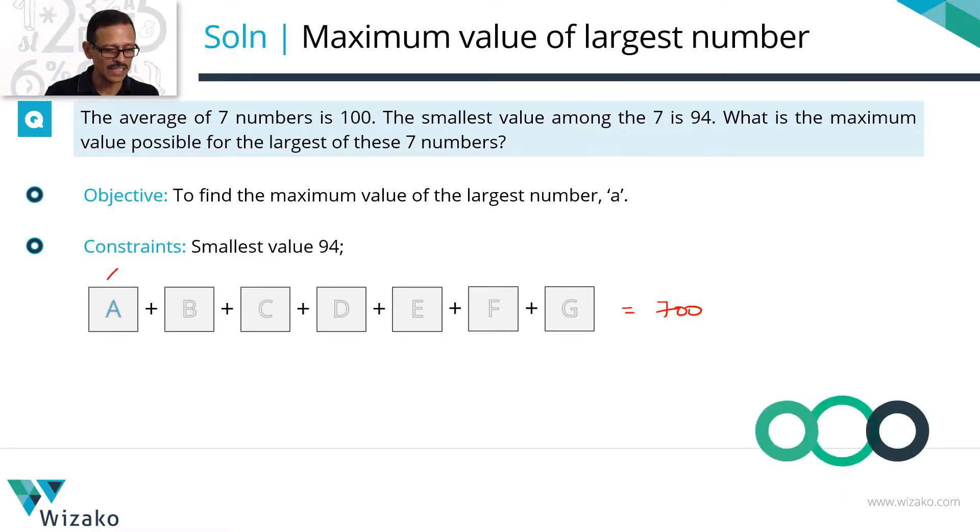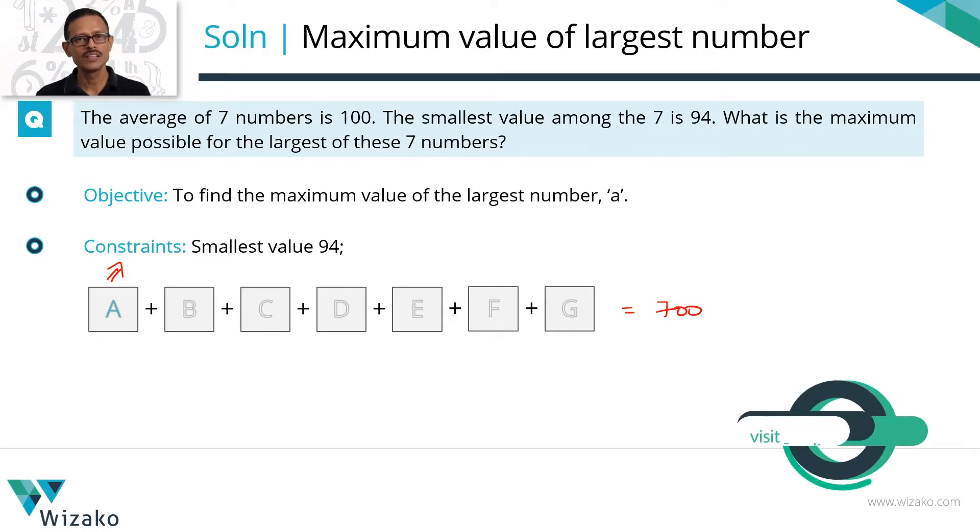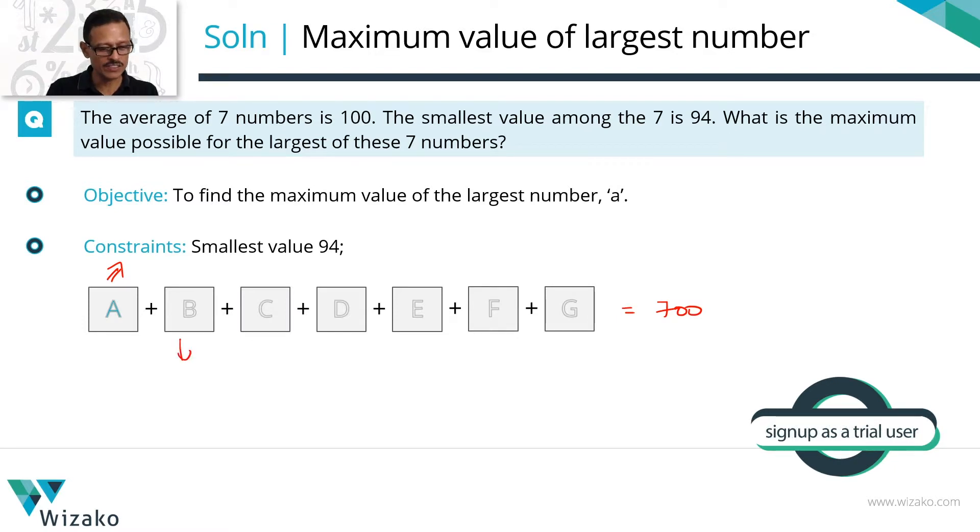We need to find out the maximum value possible for A. If you have to maximize one of these numbers, what should I do to the other numbers? The obvious thing that comes to our mind is basically minimize each of these numbers. I have to maximize this. So I'm going to minimize each one of these 6 numbers.